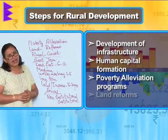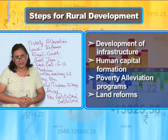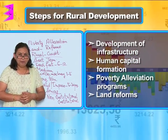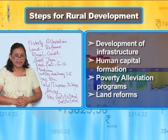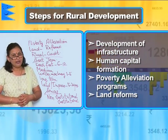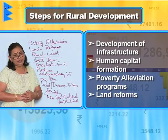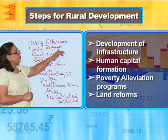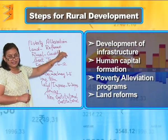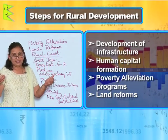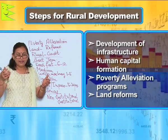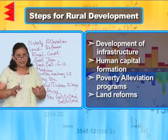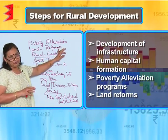The next step would be land reforms. Most of the time the people who are tilling the land are not the real land owners in the rural areas. The real land owners stay in luxury in the cities and it is the poor landless laborers who till the land for them.